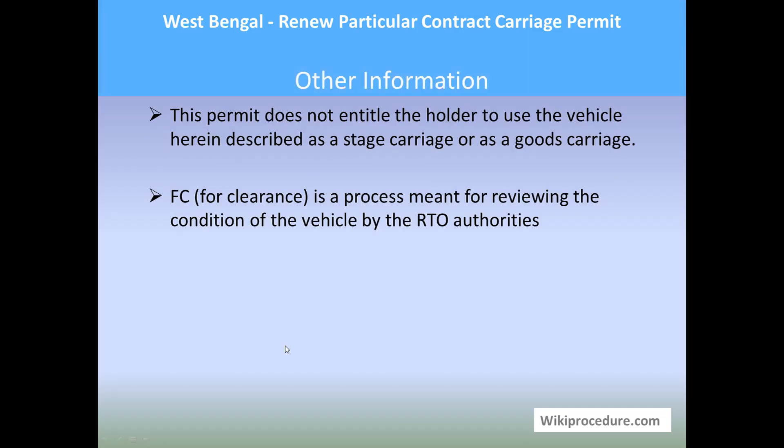Other information: this permit does not entitle the holder to use the vehicle as a stage carriage or as a goods carriage — it will be for particular carriage only. FC for clearance is a process meant for reviewing the condition of the vehicle by the RTO authorities. We hope this video helped you.